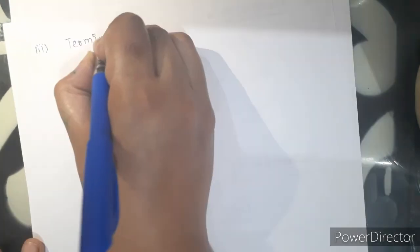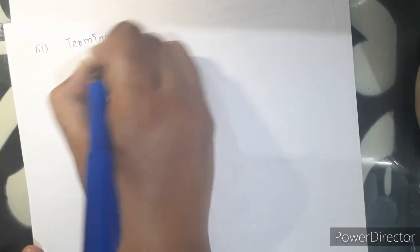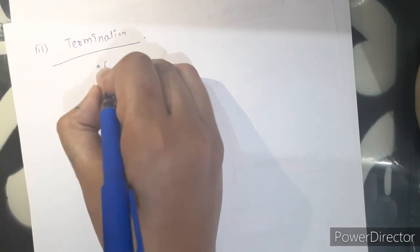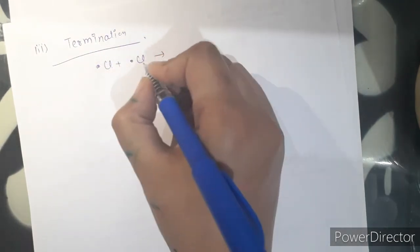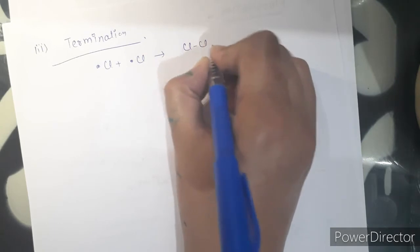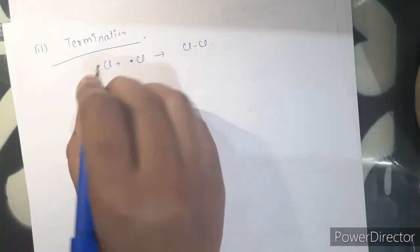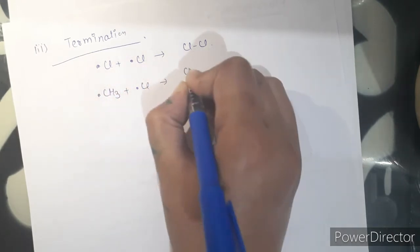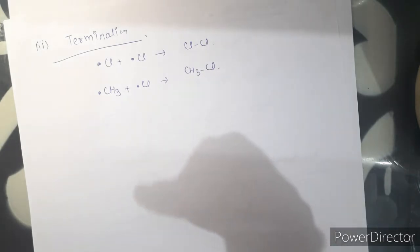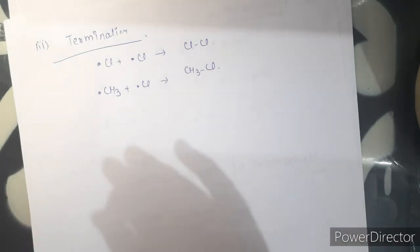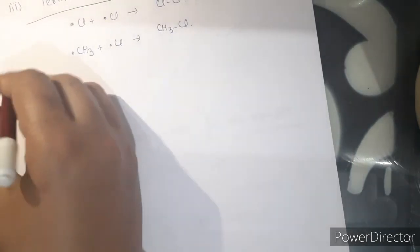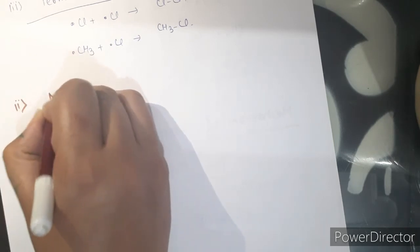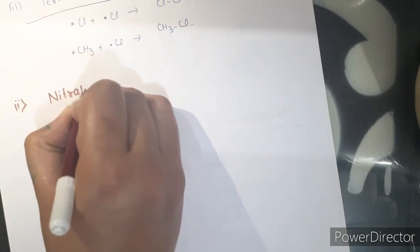The next step is termination. In termination, two different or same radicals react together and are converted into a neutral molecule, ending the chain reaction.